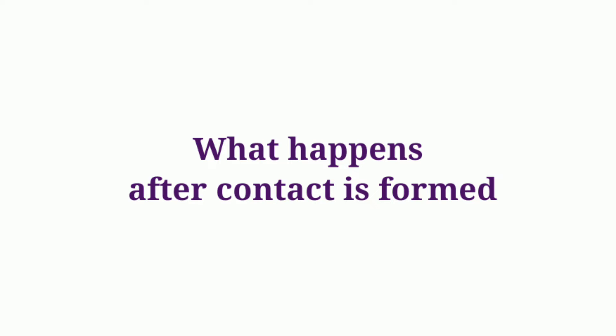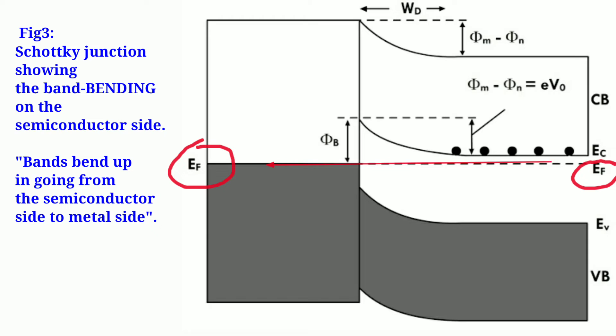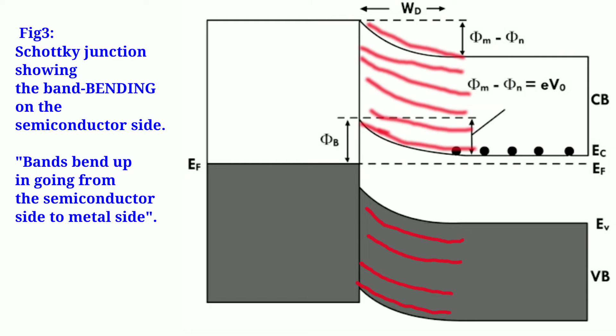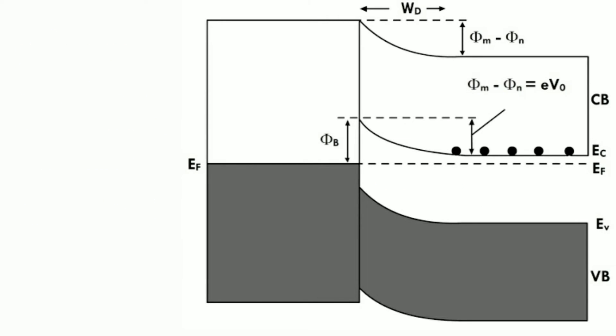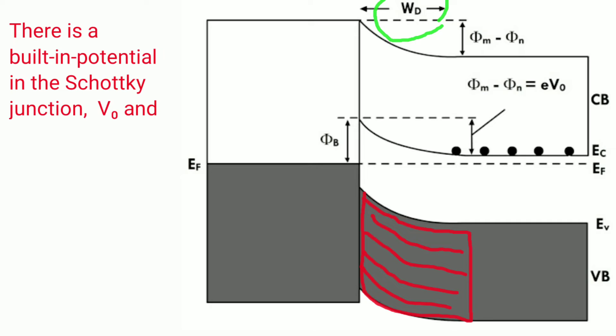When a Schottky junction is formed between a metal and a semiconductor, the Fermi levels line up and also a positive potential is formed on the semiconductor side. Because the depletion region extends within a certain depth in the semiconductor, there is bending of energy bands on the semiconductor side. The energy bands bend up in the direction of the electric field. As you may be knowing, field goes from positive charge to negative charge. Thus there is a certain region in the semiconductor denoted by W where the bands bend. This is the depletion region or the space charge region.